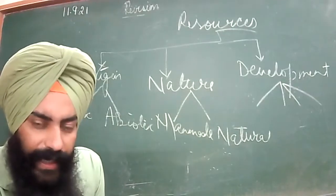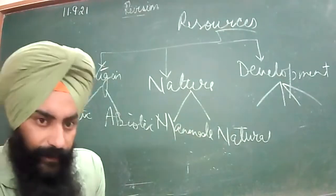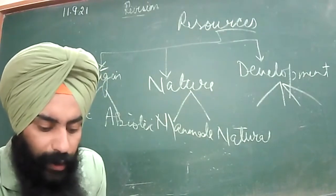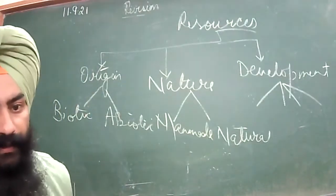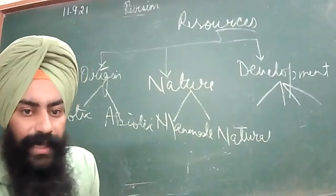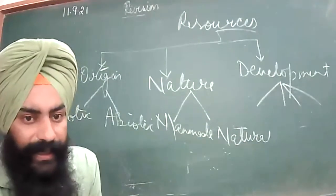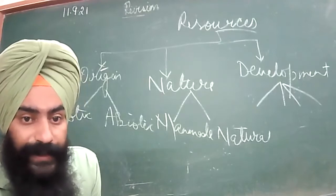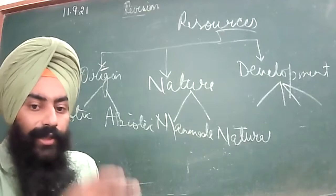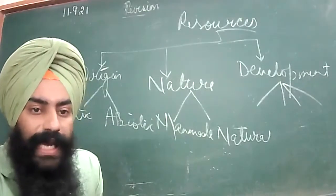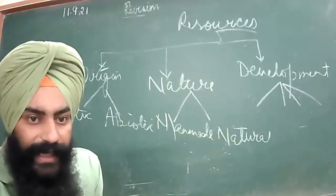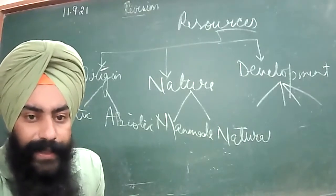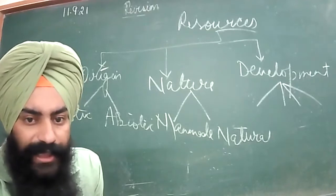Exhaustible resources are unevenly distributed over the earth. For example, coal is not available all over the earth — it is concentrated in parts of Jharkhand, Chhattisgarh, Madhya Pradesh, Odisha, Bihar, Karnataka, and Andhra Pradesh in India, but not in Jammu Kashmir, Punjab, Haryana, or Delhi. Whereas inexhaustible resources are equally distributed over the earth.